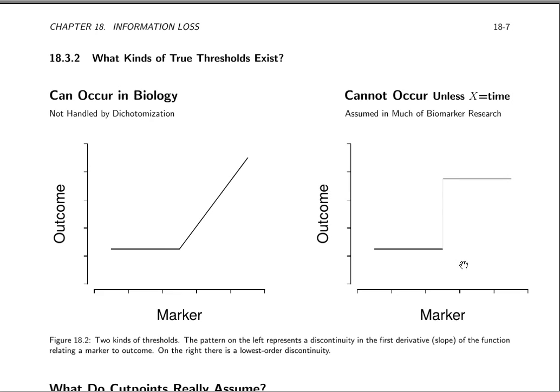You can think in biology and medicine and other fields what sort of relationships are dichotomous, and the only ones that come to mind are when the marker is time, and this is the point at which the car went over the cliff or the CEO of a company was indicted, and something bad happens to the company. So when this is time, and what happens here is an event, an event can create a discontinuity and an outcome, but if this is not time, we haven't thought of any example where this sort of relationship would really exist.